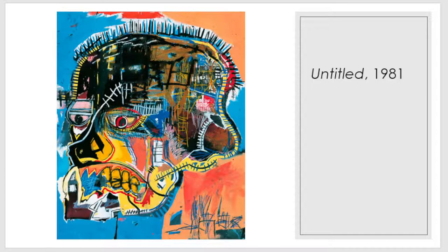One of his most well-known pieces is an untitled painting created in 1981. This depicts a head with a subdued and defeated facial expression accompanied by bright colors and chaotic line rhythms. This provides a very interesting contrast — the vibrant and chaotic characteristics could represent his booming fame as an artist, while the expression could represent the stress or other negative emotions that come from such fame.